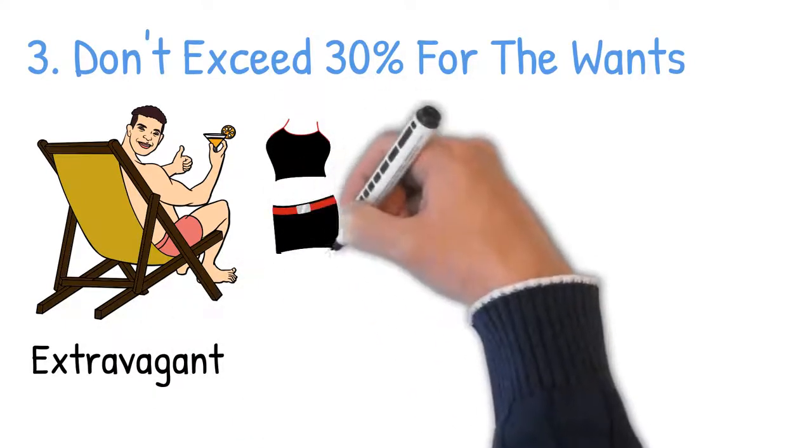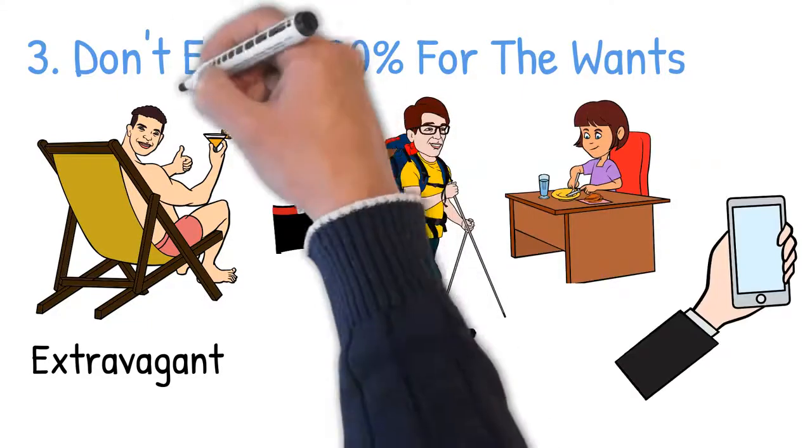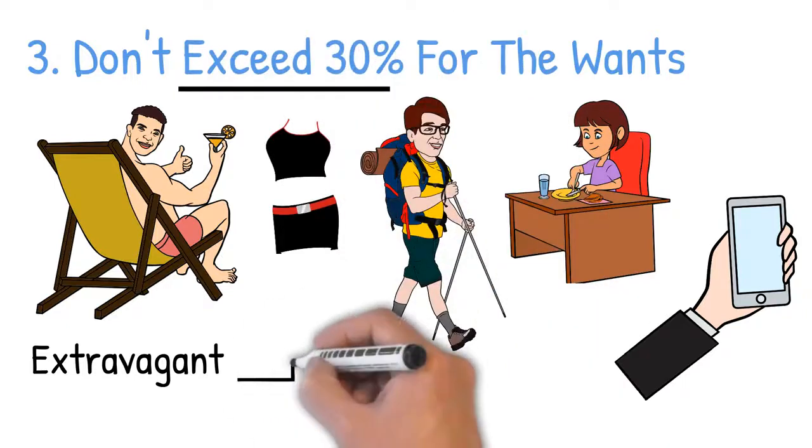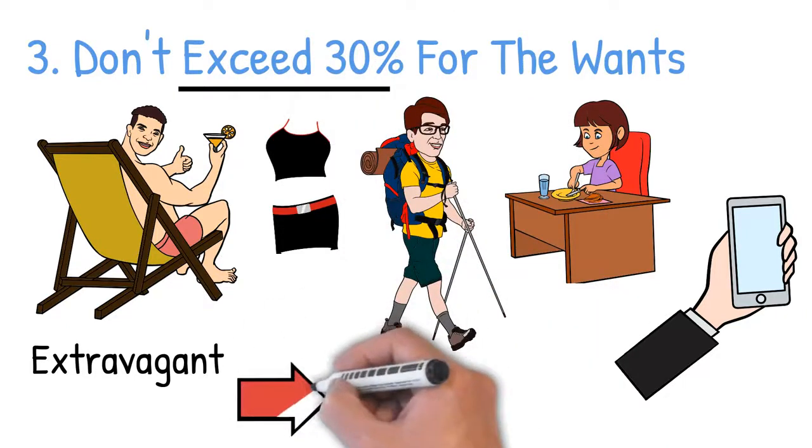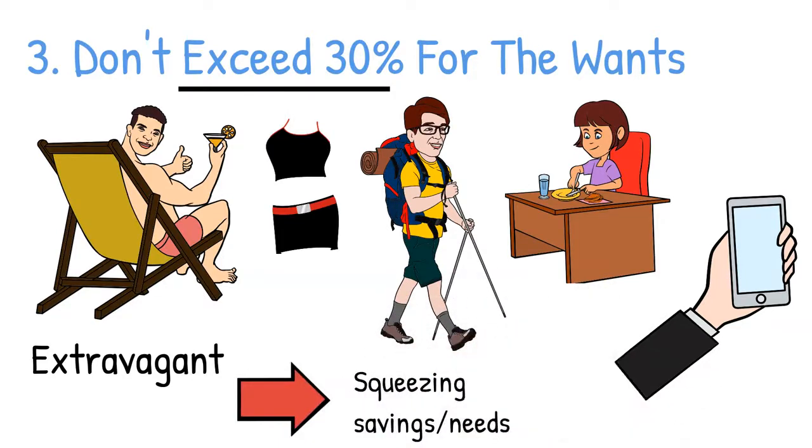You can buy beautiful clothes, go on a vacation, eat out once in a while, and get a new gadget, provided you stay within your 30% allocation. It's only a problem when you stretch your wants bucket list to more than 30%. That means squeezing your savings or needs, and that's a bad idea.